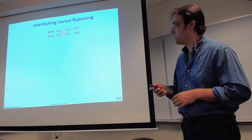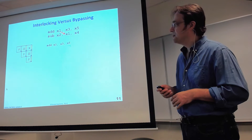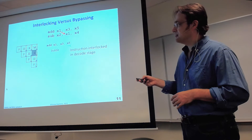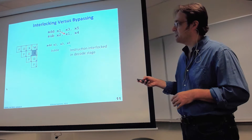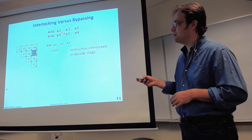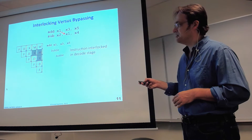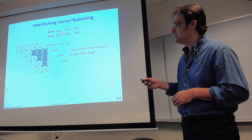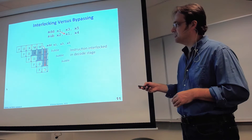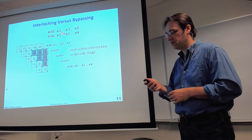Comparing interlocking versus bypassing: for an add followed by a subtract on the same register, with interlocking the subtract stays in decode while bubbles flow down the pipeline until the add writes to the register file during writeback — three wasted cycles. With bypassing, as soon as the value is produced at the end of the ALU execute stage, it feeds directly into the following instruction's execute stage. No bubbles, no interlocks. Bypassing is a very standard technique in in-order pipelines.